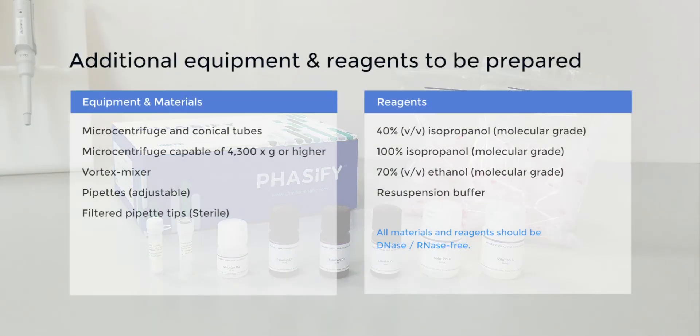Other equipment and reagents you will need are microcentrifuge or conical tubes, a benchtop centrifuge that goes up to 4300 RCF or higher, a vortex, pipettes and filtered pipette tips.